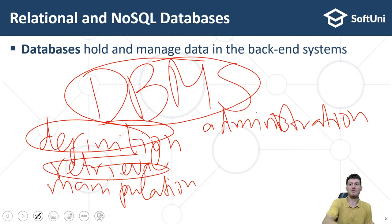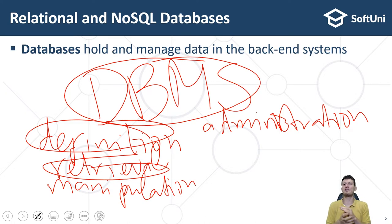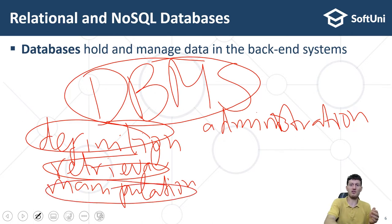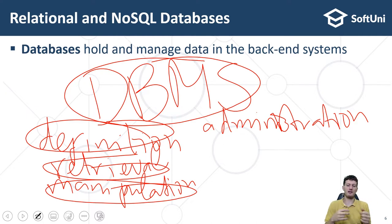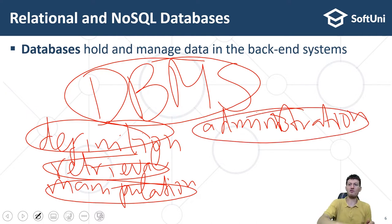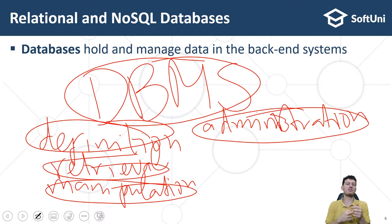Data retrieval covers querying, searching, filtering, extracting, combining, and aggregating data. Data manipulation covers inserting new data, modifying existing data, and deleting existing data. Data administration covers users, roles and access controls, concurrency control, monitoring, replication, backup and recovery, and others.